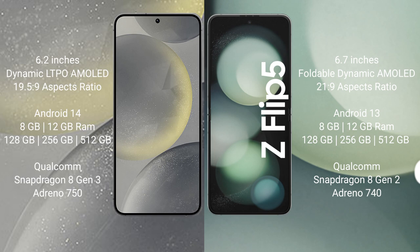The Samsung S24 comes with 8GB or 12GB of RAM, 128GB or 256GB of internal storage, a Qualcomm Snapdragon 8 Gen 3 processor, and an Adreno 750 GPU.